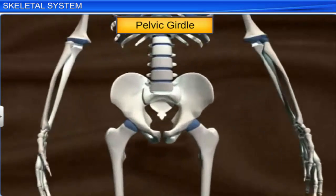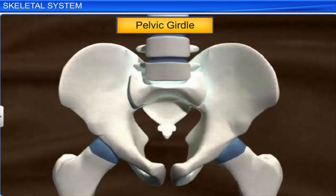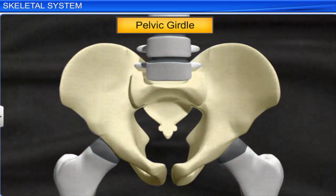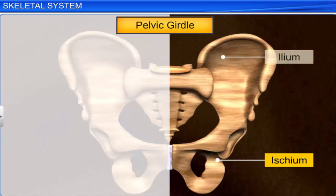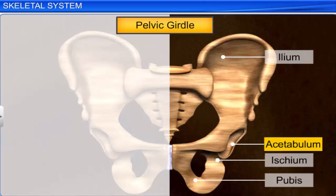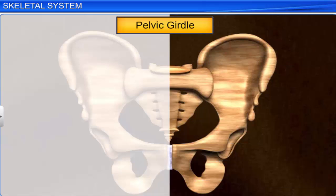The other girdle is the pelvic girdle, which consists of two coxal or hip bones. Each coxal bone consists of three bones: the ileum, ischium, and pubis. These bones fuse to form a cavity called the acetabulum, into which fits the head of the femur or thigh bone. The two halves of the hip bones connect dorsally to the sacrum.